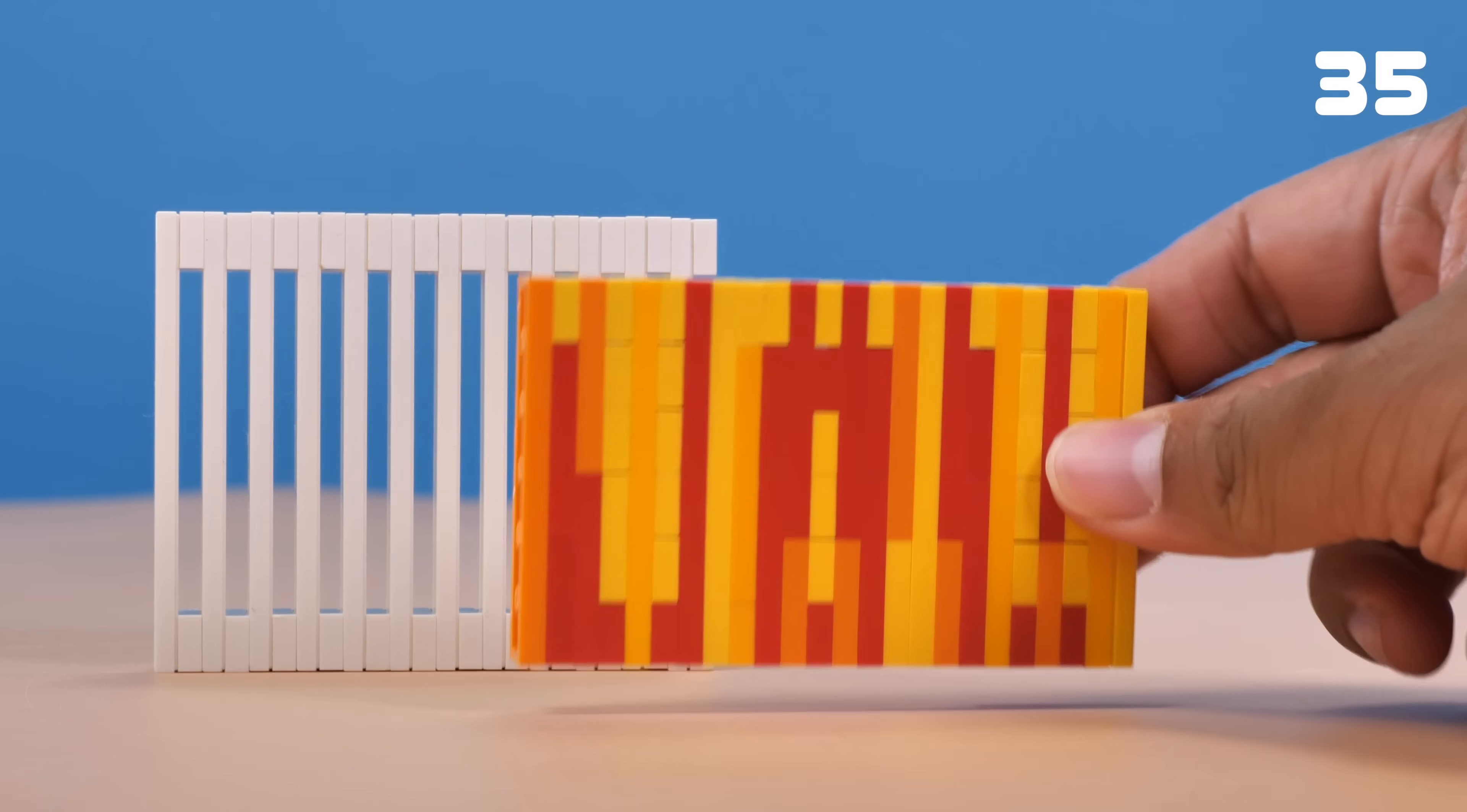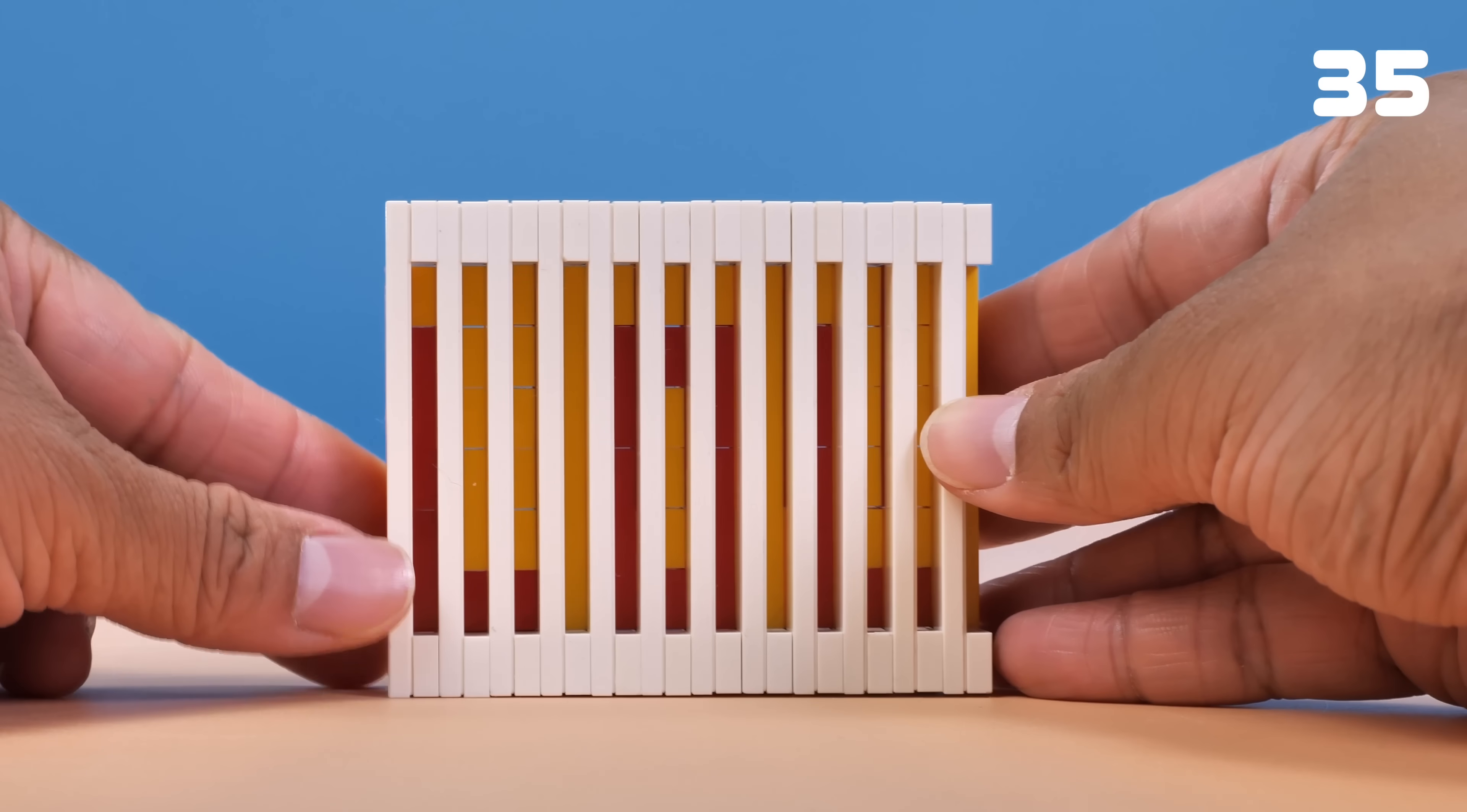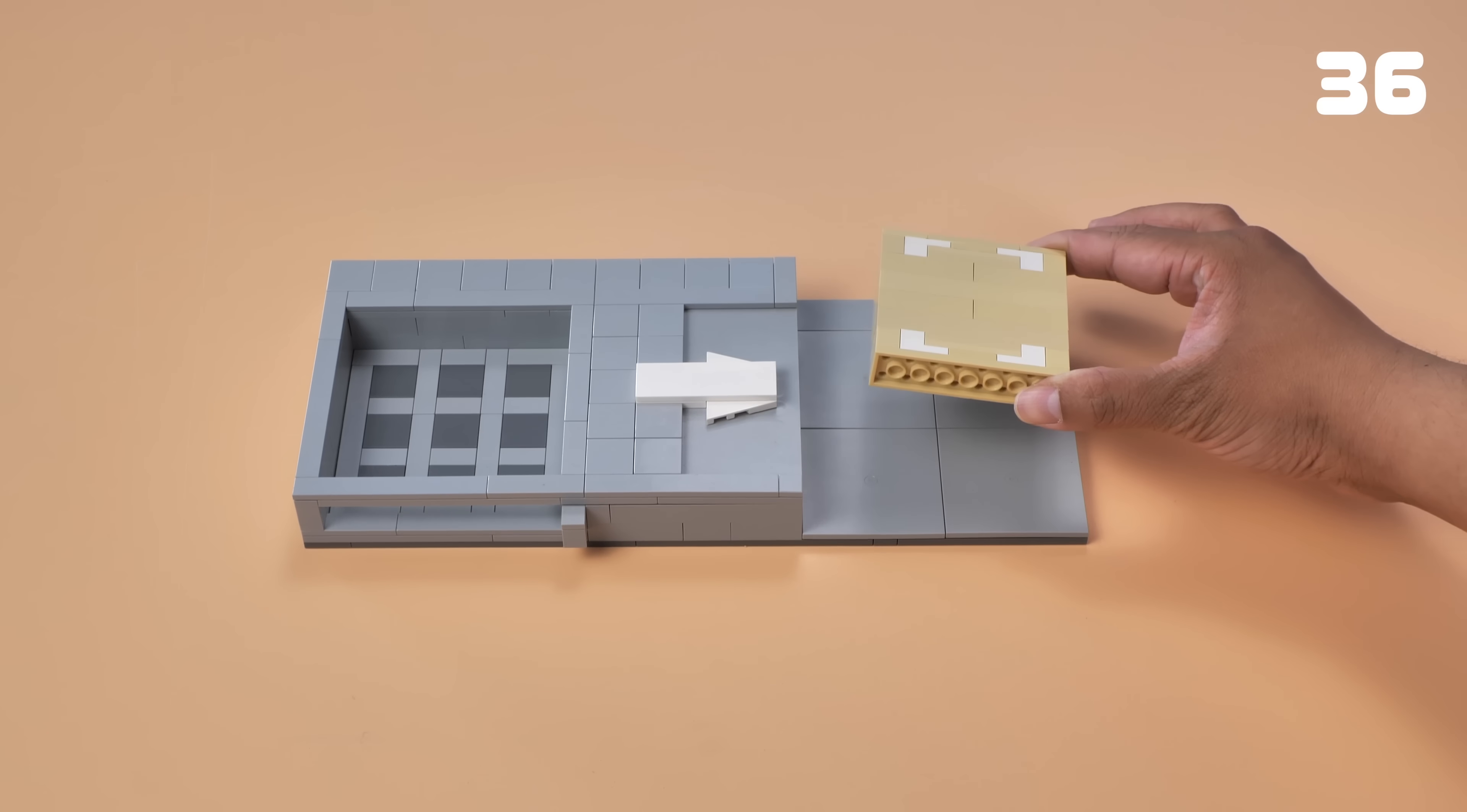This is a trick to reveal hidden messages. The red and yellow plate appears to be a mess, but if you put it behind the white grill, the hidden letters will appear. You can also find hidden recipes with LEGO, like this crafting table. I'm turning gold ingots to a gold block.